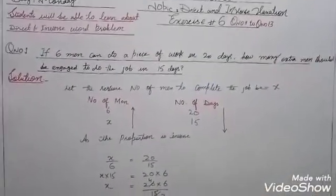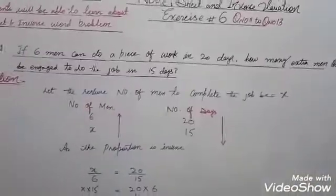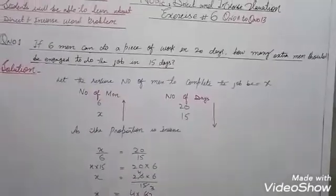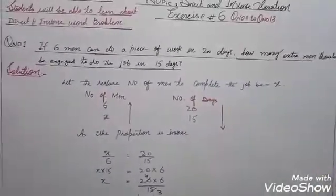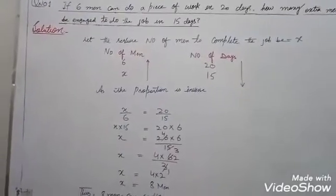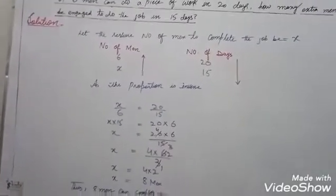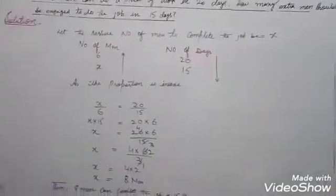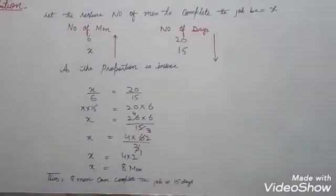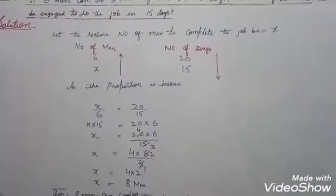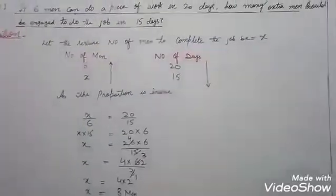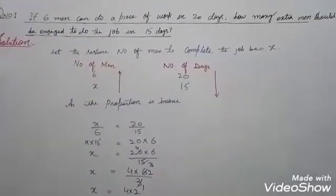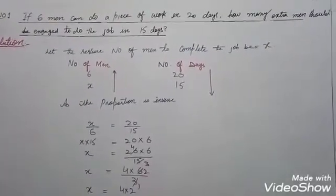The next question: if six men can do a piece of work in 20 days, how many extra men should be engaged to complete the job in 15 days? Let the required number of men be x. If the number of days decreases, the number of men increases — so this is an inverse proportion.